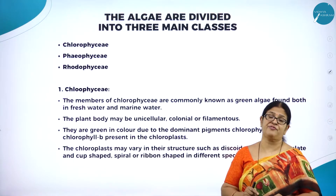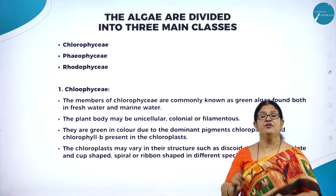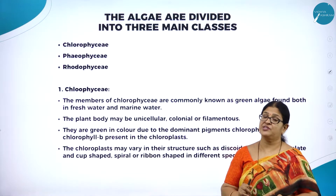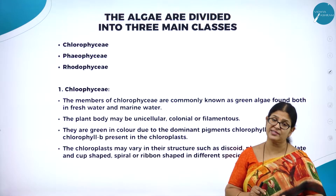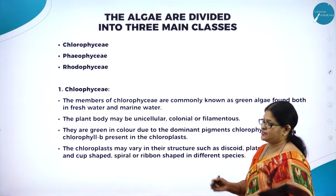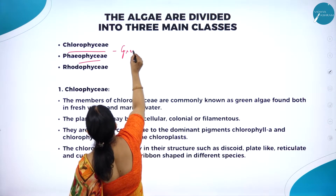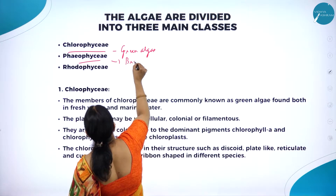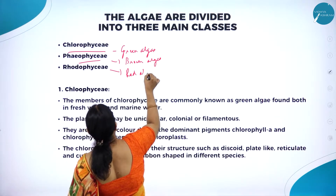We had started off with algae and studied its characteristic features and economic importance. Moving on to the remaining concepts, we will be studying the classification of algae — the basis for classifying algae into different classes: Chlorophyceae, Phaeophyceae, and Rhodophyceae. Chlorophyceae is called green algae, Phaeophyceae is called brown algae, and Rhodophyceae is called red algae.